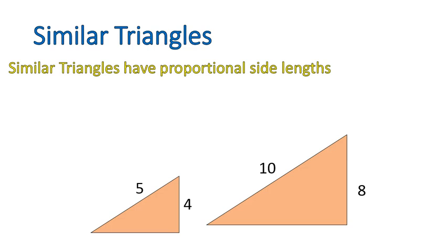Here's an example. The smaller triangle has the side lengths five and four. The larger triangle has a side length of ten and eight. Five over four is equal to ten over eight. So if we write them out as equivalent ratios, you notice that they are proportional.